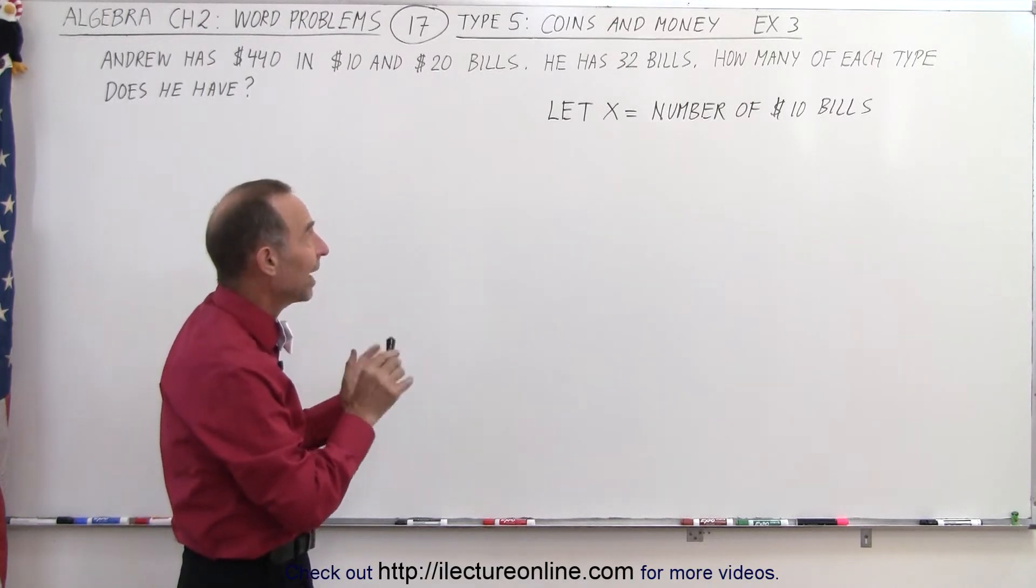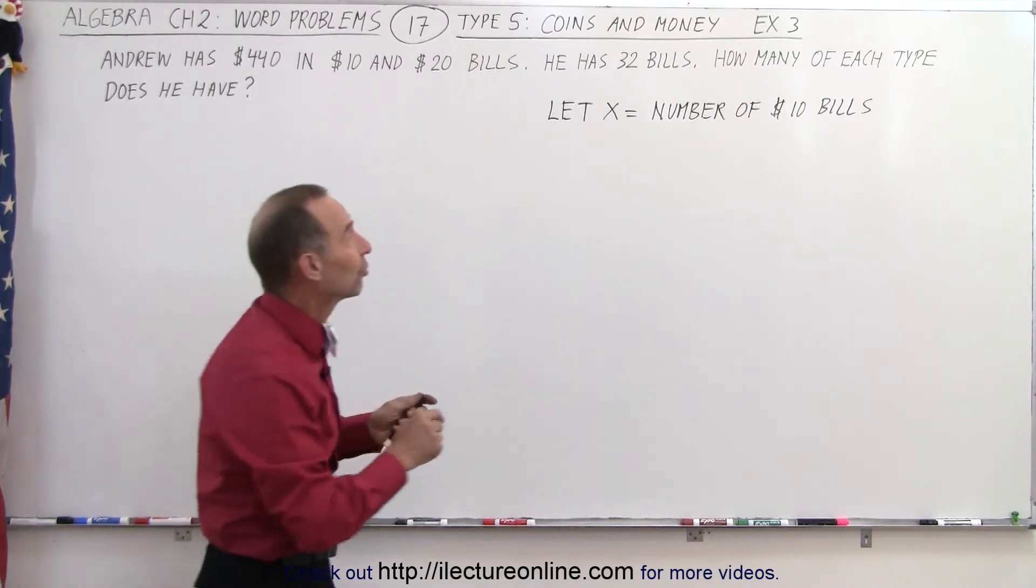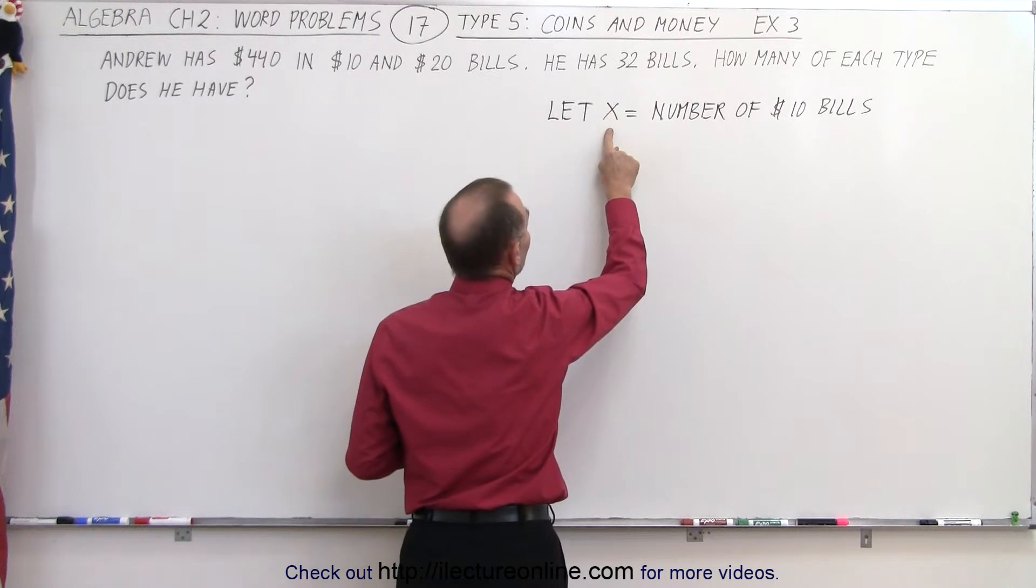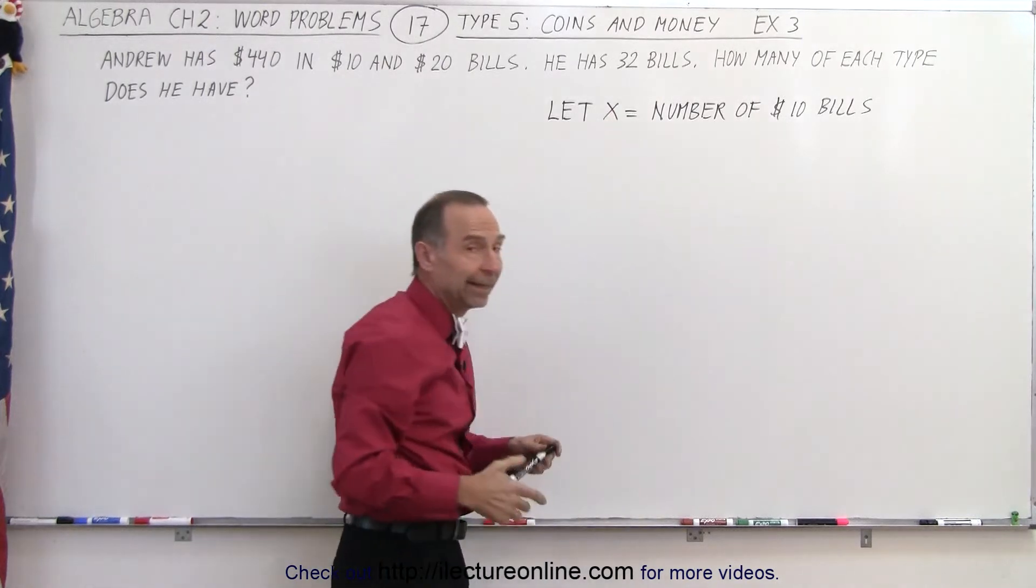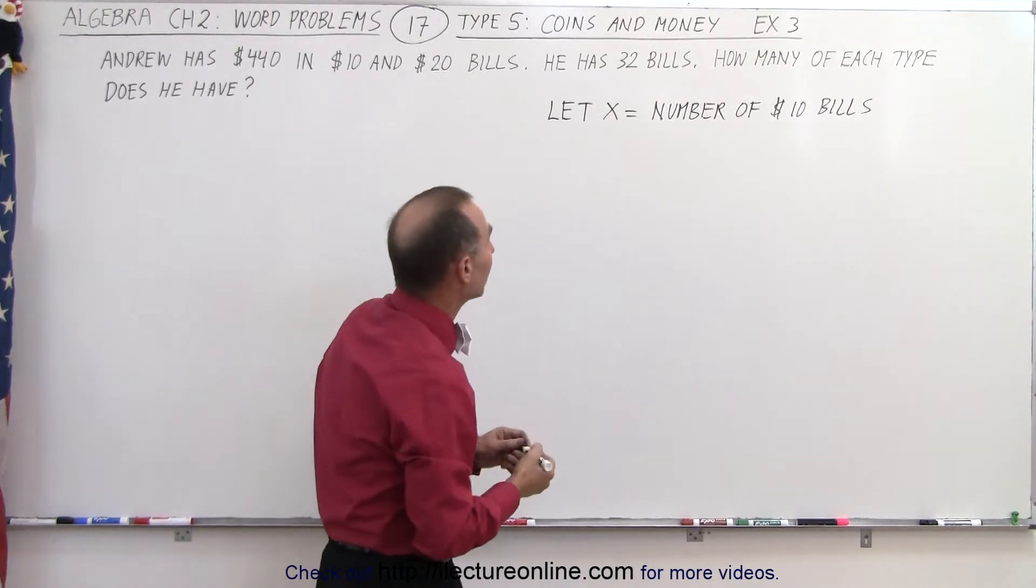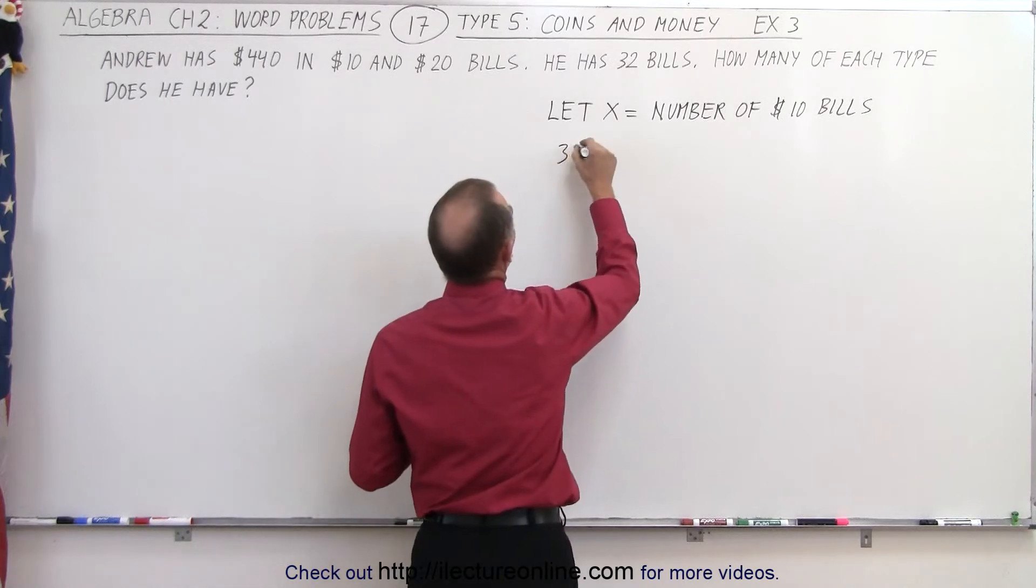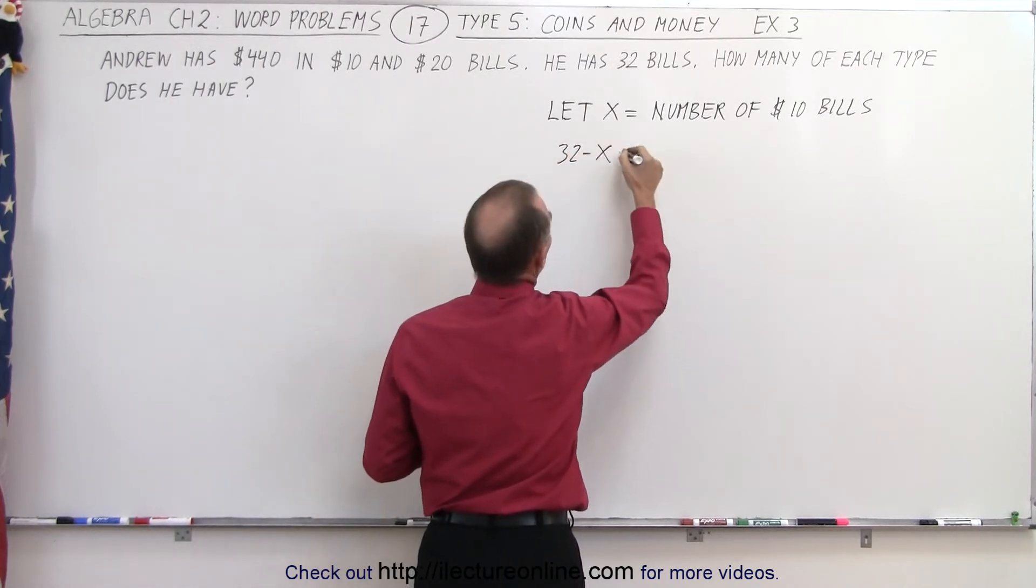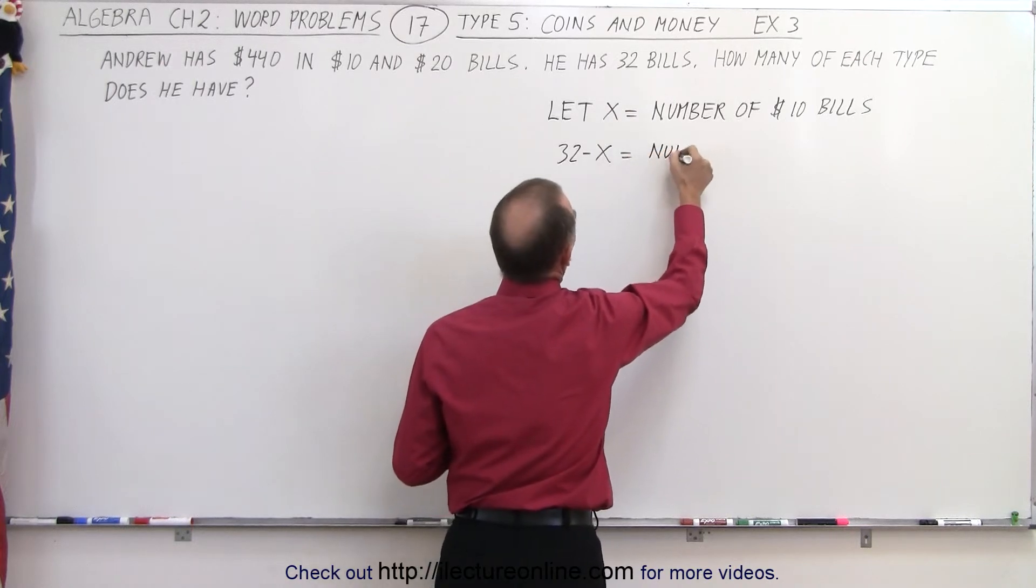Well, we don't know relative to x, but we do know that there's a total of 32. So we take the total of 32 and subtract from that the number of bills that we have of the $10 kind. The remainder would be the $20 kind. So 32 minus x, the total minus the number of $10 bills, must equal the number of $20 bills.